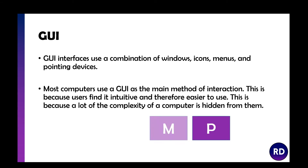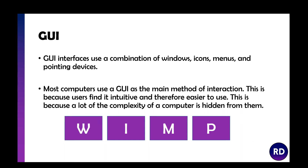GUI stands for graphical user interface, which is a combination of windows, icons, menus and pointing devices. I'd say 100% of interfaces you'll have used will be GUI because it's intuitive and easier to use. They use icons such as the save icon which hides all the complicated commands you might otherwise have to type out. It gets rid of all that complexity by letting you just press a button.